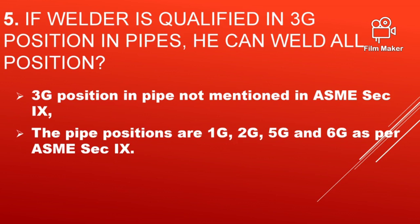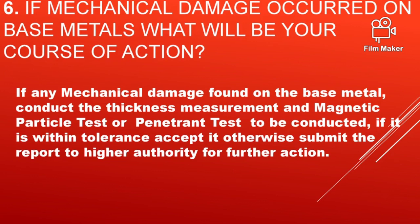If a welder is qualified in the 3G position in pipes, can he weld all positions? Actually the answer is no — the 3G position is for plate only. The pipe positions are 1G, 2G, 5G, and 6G as per ASME Section 9.